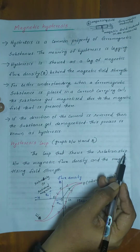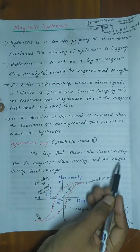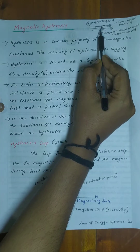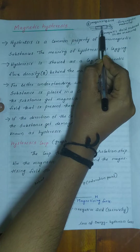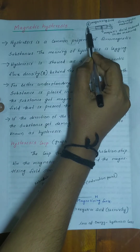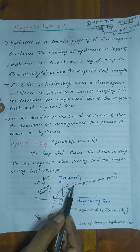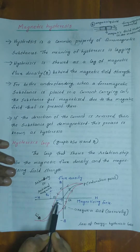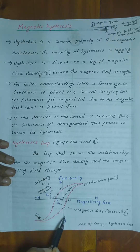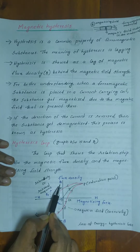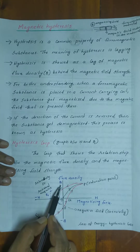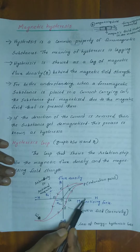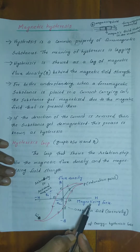The hysteresis loop shows the relationship between the magnetic flux density B and the magnetizing field strength H. In this graph, the vertical axis is B, which is the magnetic flux density, and the horizontal axis is H, which is the magnetizing force.